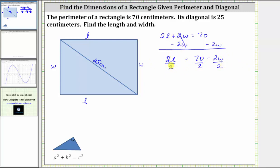Simplifying here, we have one L, or L equals 70 divided by two is 35. And here we have two divided by two, which simplifies to one, giving us just minus W. So now we can say that L is equal to 35 minus W.